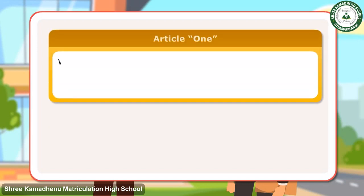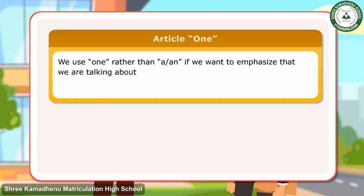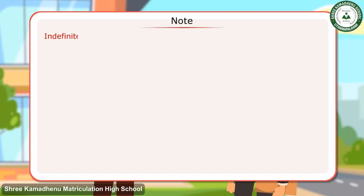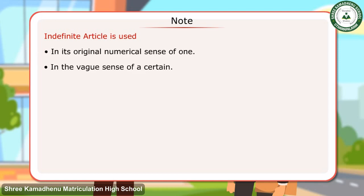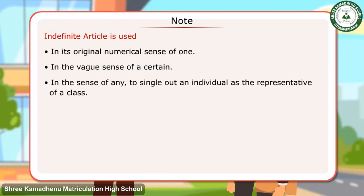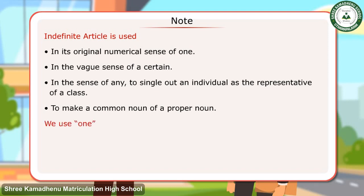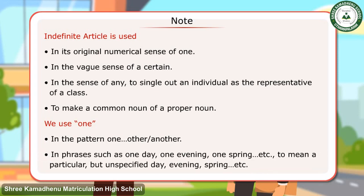Article ONE: We use 'one' rather than 'a' or 'an' if we want to emphasize that we are talking about only one thing or person rather than two or more. Note: The indefinite article is used in its original numerical sense of 'one,' in the vague sense of 'a certain,' in the sense of 'any' to single out an individual as the representative of a class, and to make a common noun of a proper noun. We use 'one' in the pattern one/other/another, and in phrases such as 'one day,' 'one evening,' 'one spring,' to mean a particular but unspecified day, evening, spring, etc.